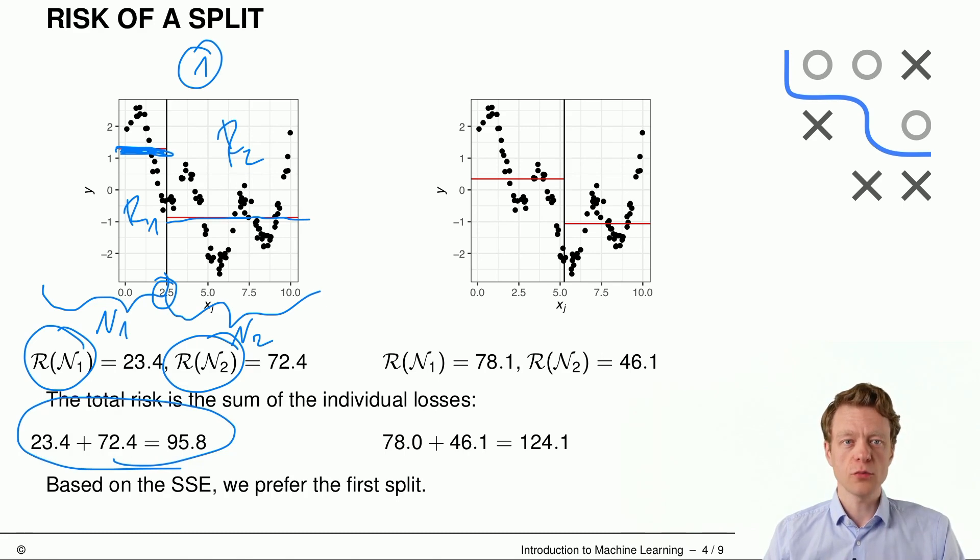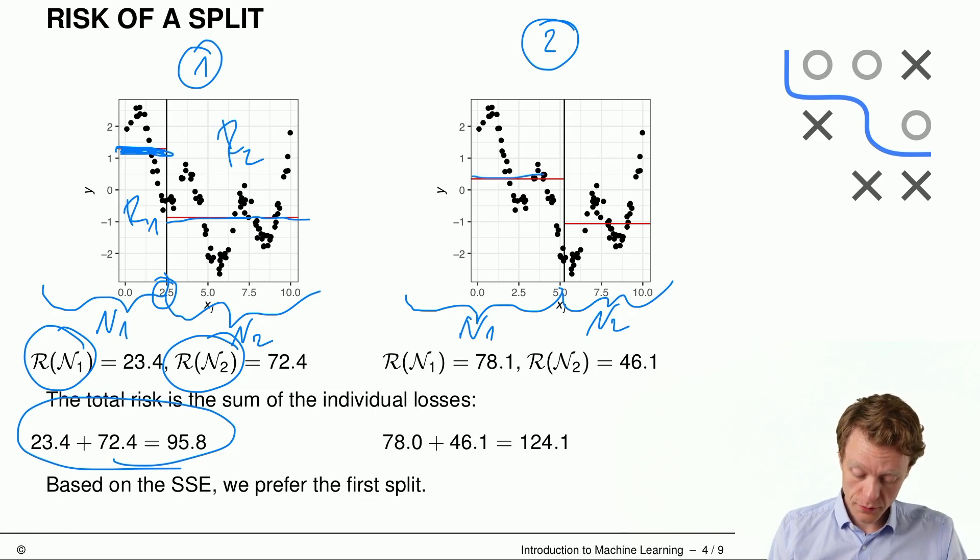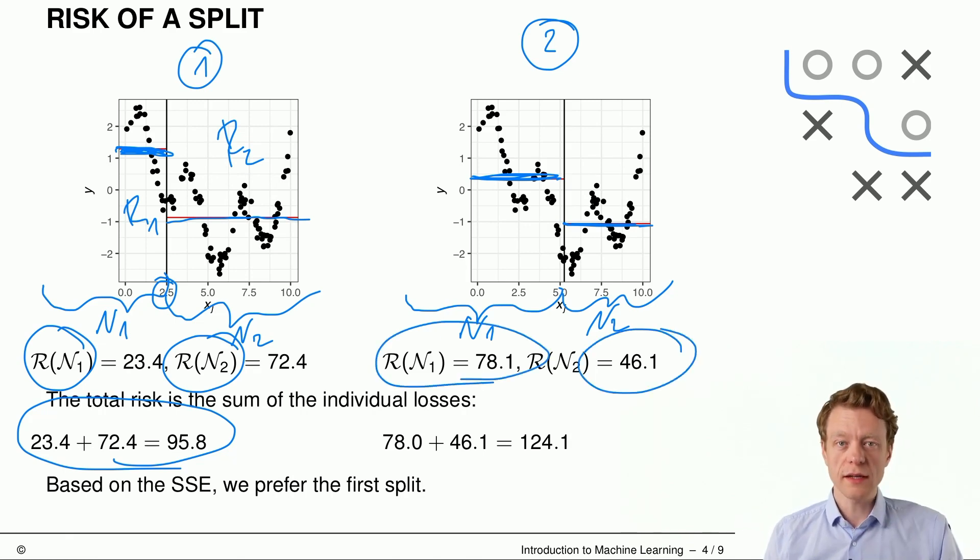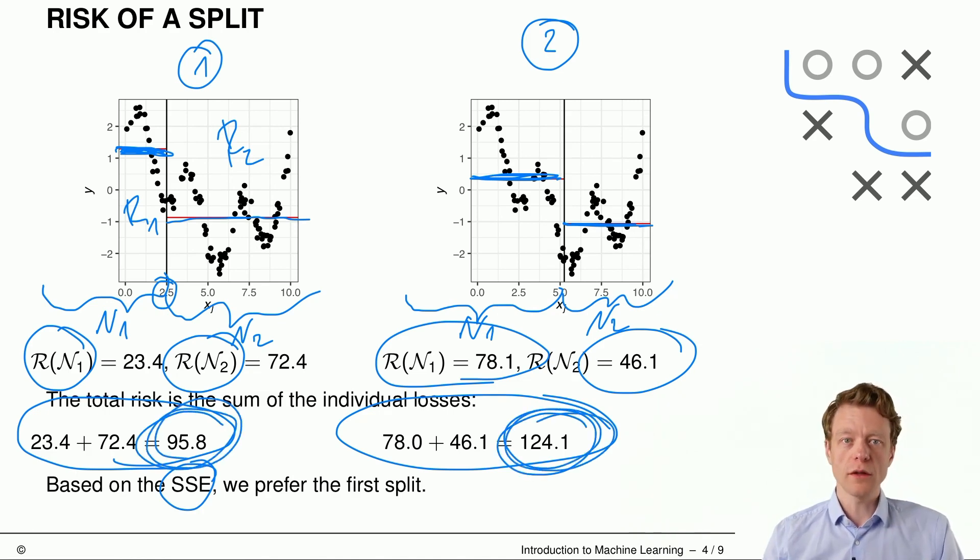And we can do the exact same thing for the right hand side plot, so let's call this 2. And here the splitting is different, so we have different nodes n1 and n2 leading to different optimal constants. And those optimal constants lead to different risks, 78.1 and 46.1. And again we can sum up those two risks here. And now, based on the sum of squared errors here, we prefer the first split because 95.8 is smaller than 124.1. So we just compared two possible split points and we computed the risk of the tree that would result by splitting at those split points.